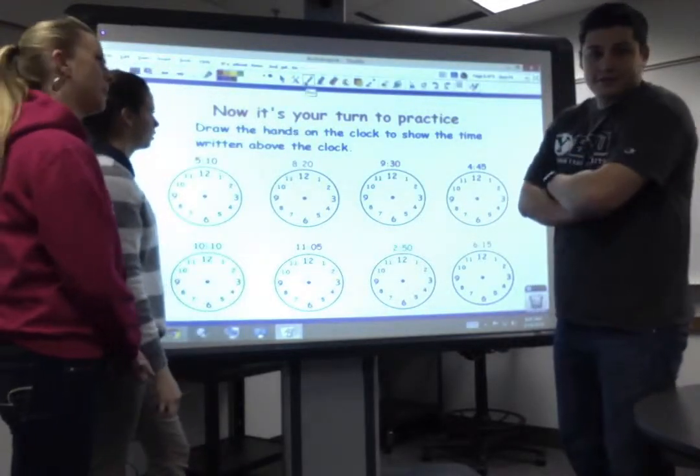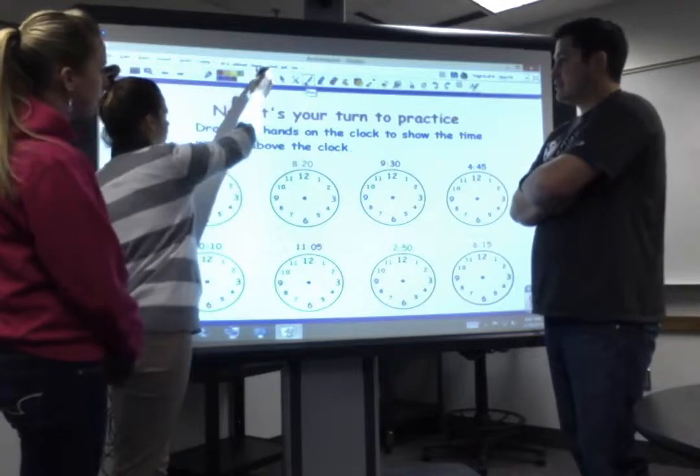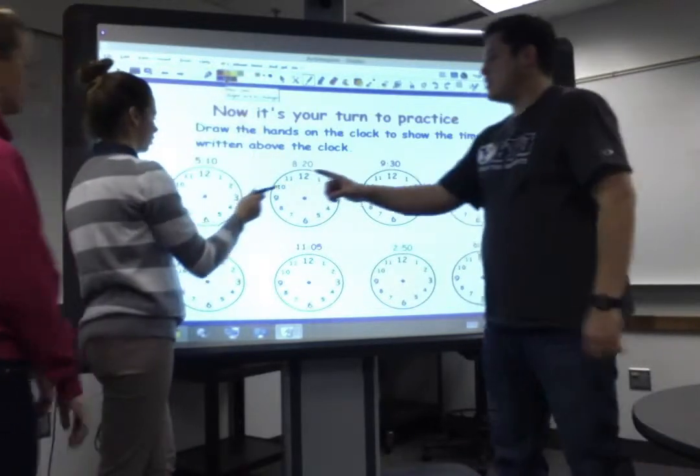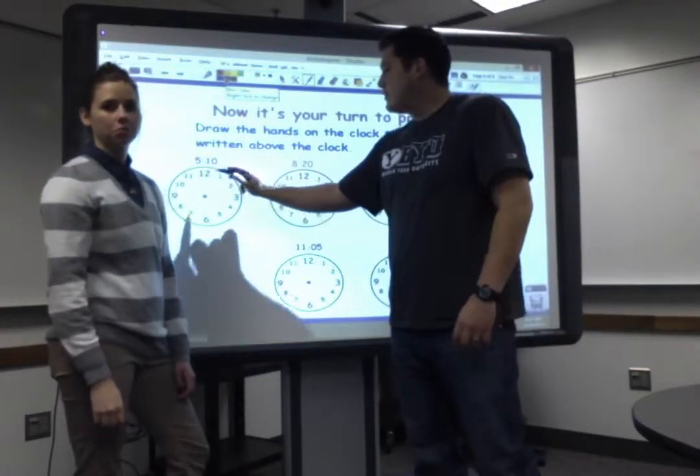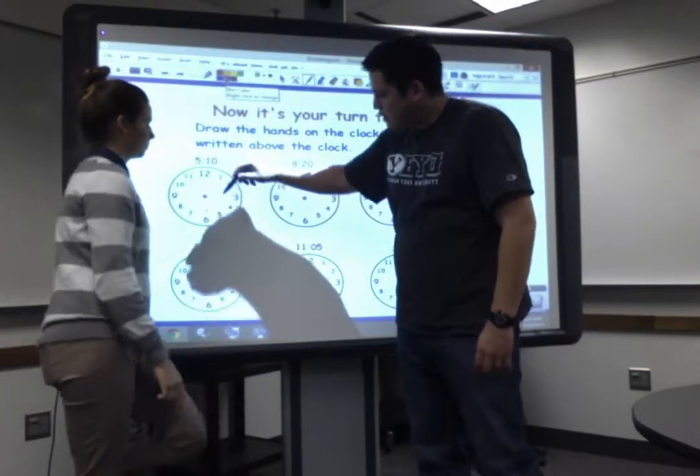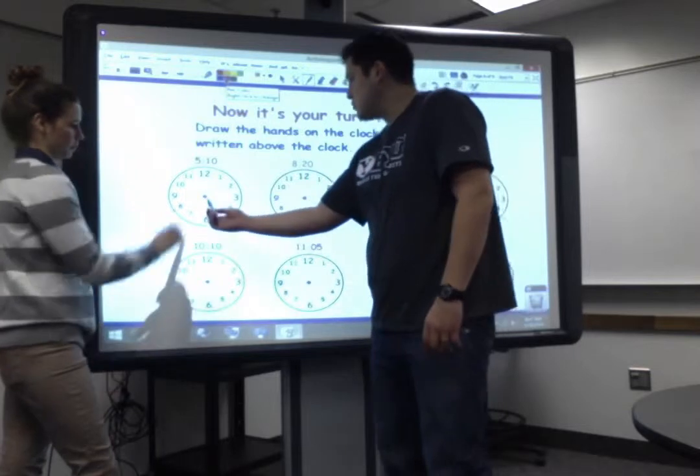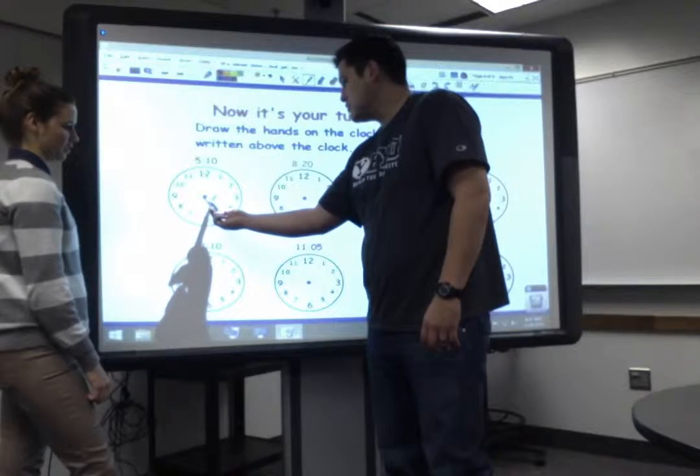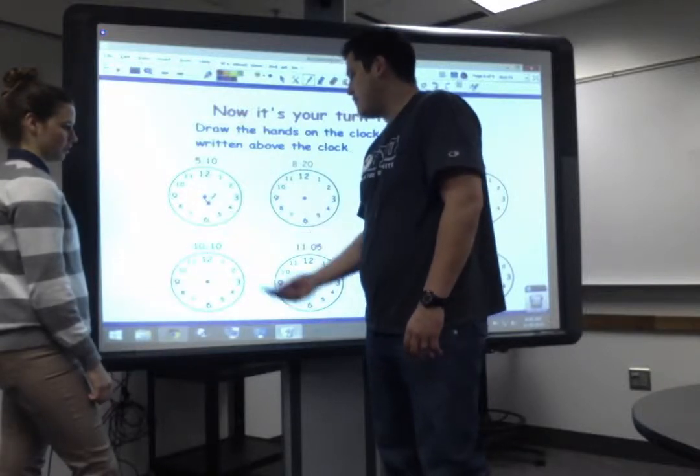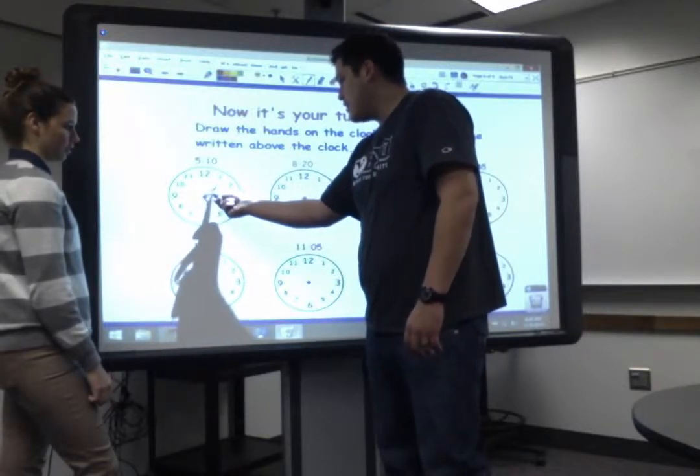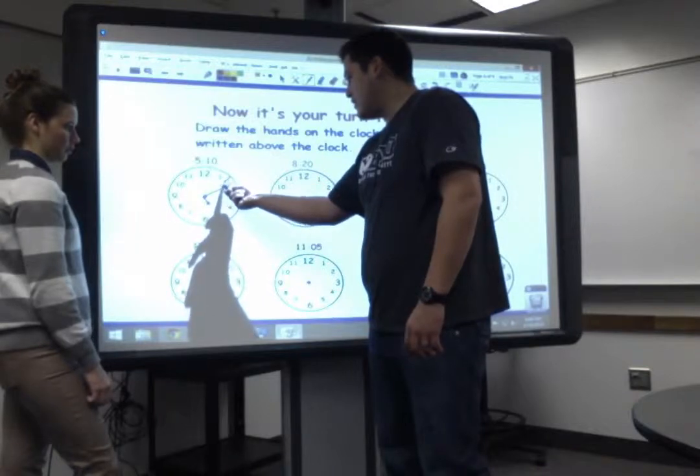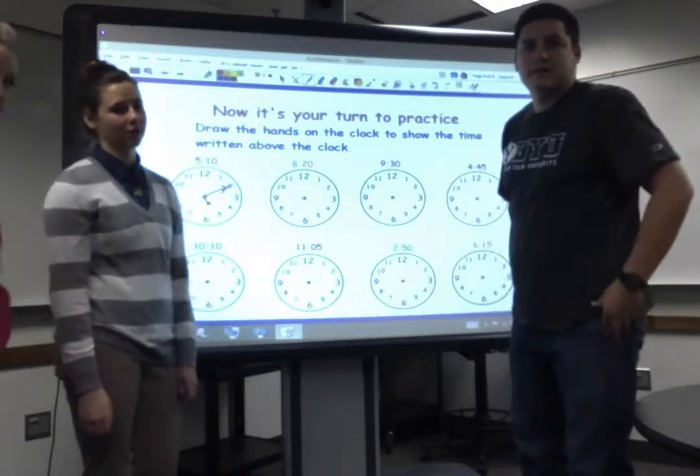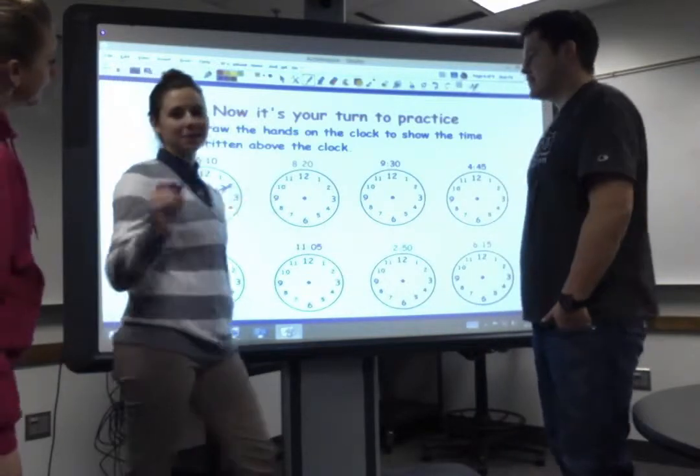Now it's our turn to practice. Ben, draw the hands on the clock to show the time written above the clock. Okay, here we go. So it is 5:10. So the long hand goes at 5, and the short hand goes at 10 o'clock. If we were in a real classroom, we'd have the kids come up and show us. But we'll keep going.